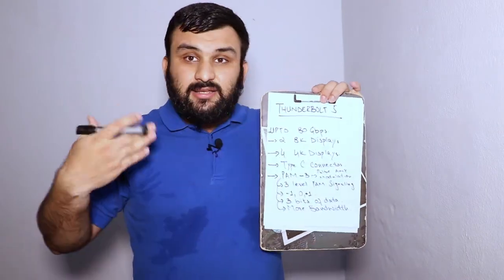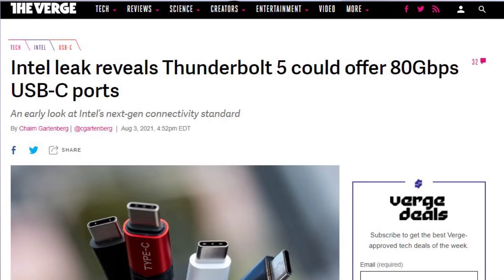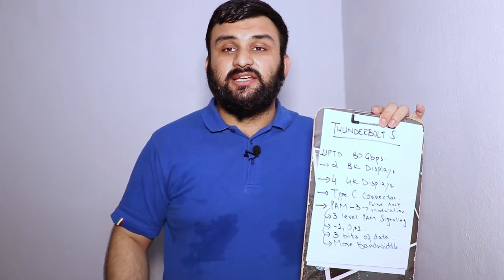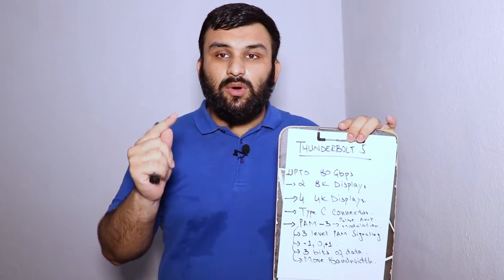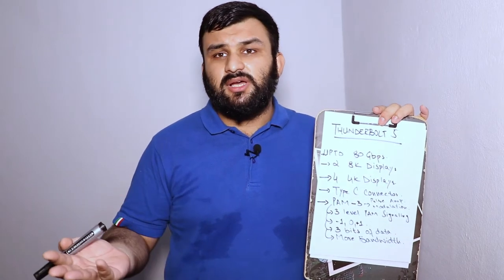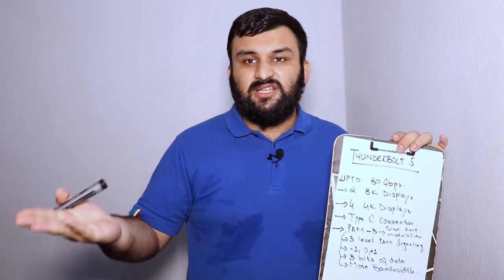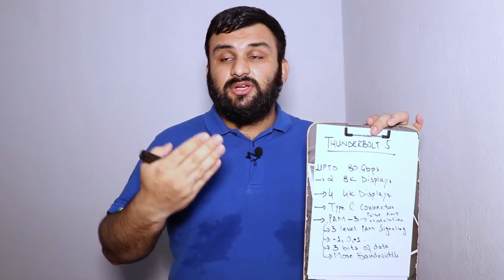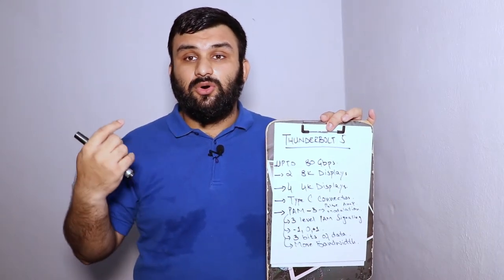Thunderbolt 3 and Thunderbolt 4 offered 40 gigabits of bandwidth, which means you could use two 4K displays or one 8K display. Nowadays most displays use one Type-C connector, and they also include charging and all that — one connector means you can use a dock and connect your HDMI, DisplayPort, charging, USB 3, headphone, and even SD card or micro SD card slots.